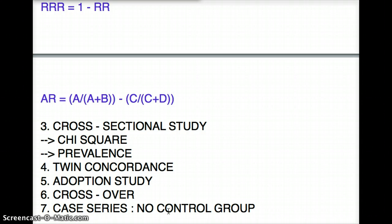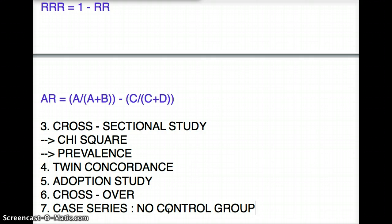One way to identify a case series study: if it's not case control, not cohort, not cross-sectional, not cross-over, or not any other named study type, it's usually a case series study with no control group. That's a very important point.